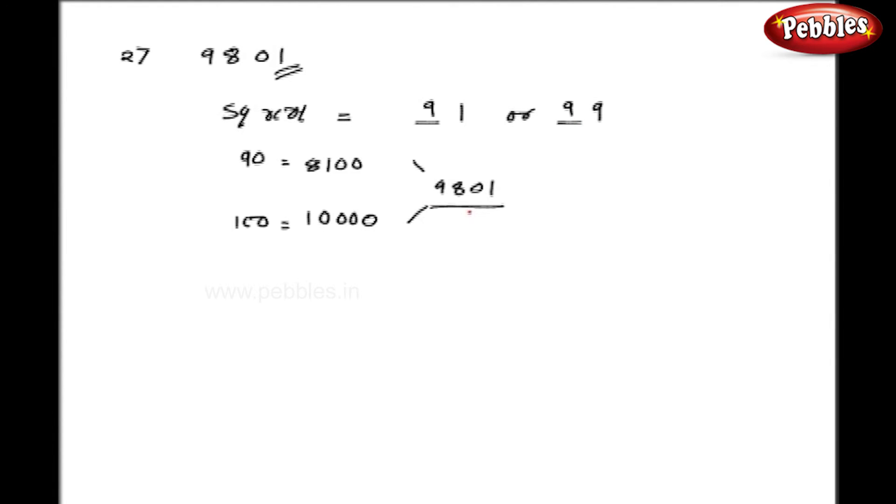Now, as you can judge that 9801 is closer to the higher number. So, my square root is again the higher number between 91 and 99. Hence, square root of 9801 is 99.